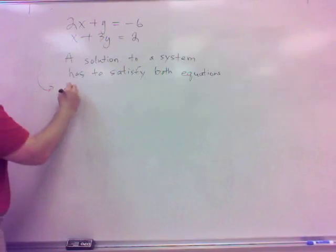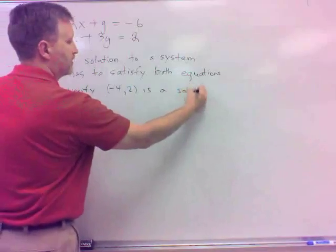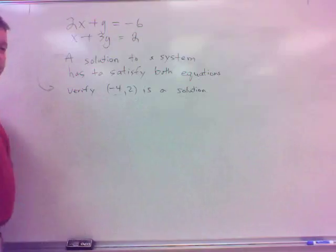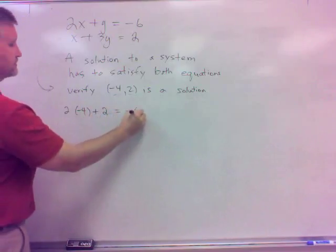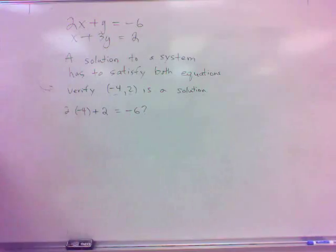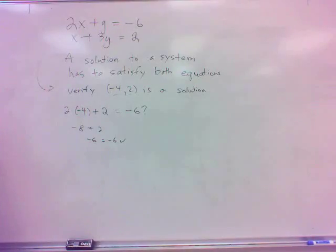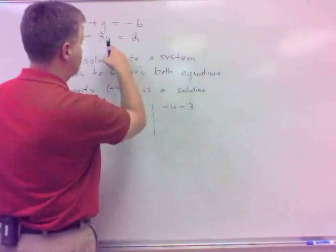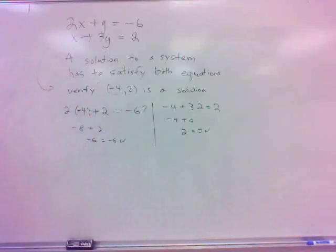For example, let's verify here that negative 4, 2 is a solution. And so how would I verify it, make sure it is, just plug it in. Plug in the X to be negative 4, Y to be 2, right? See if it works in both. 2 times negative 4 plus 2 equals negative 6. Is that true? Negative 8 plus 2 is this side. That's negative 6 equals negative 6. Okay, but is that enough, sufficient to say it's a solution? No. You need another one to work. You need this one to work also with negative 4, 2. Negative 4 for X there and positive 2 for the Y there. Negative 4 plus 6, does that equal 2? Sure does.